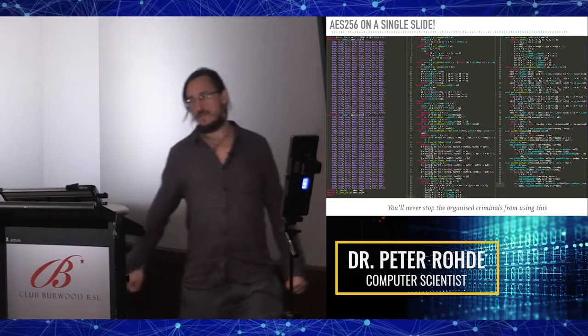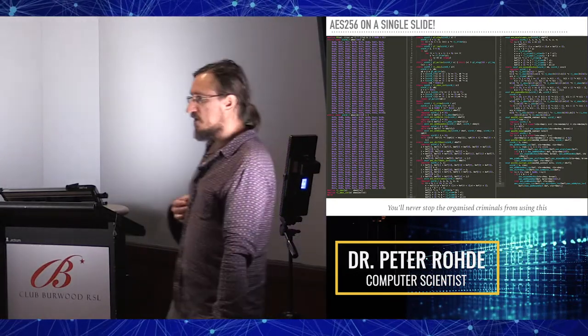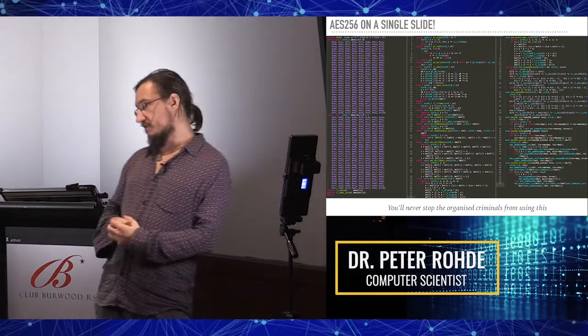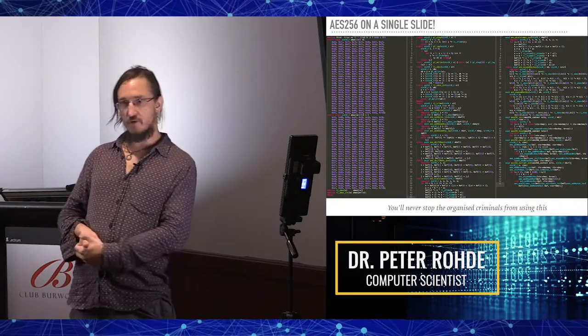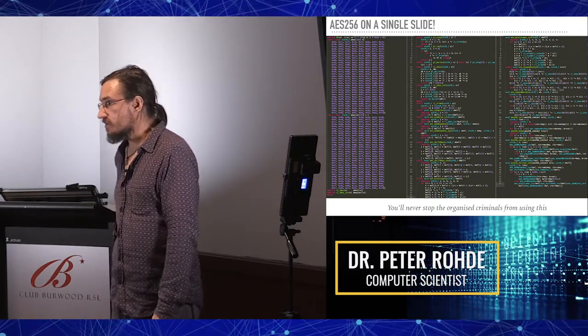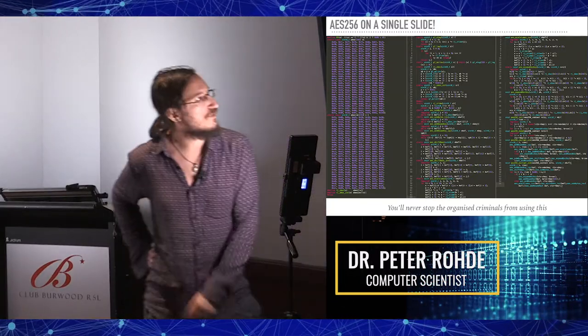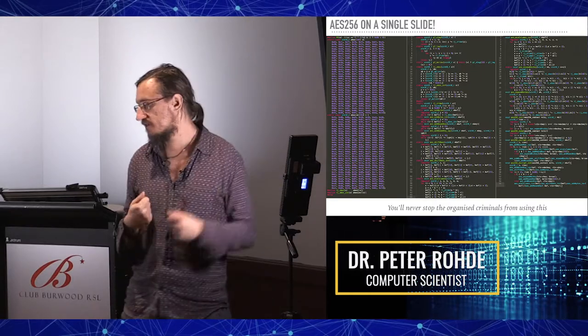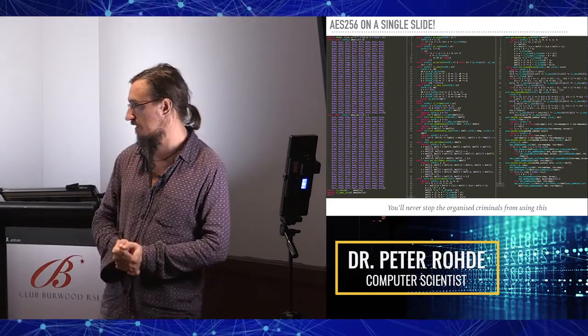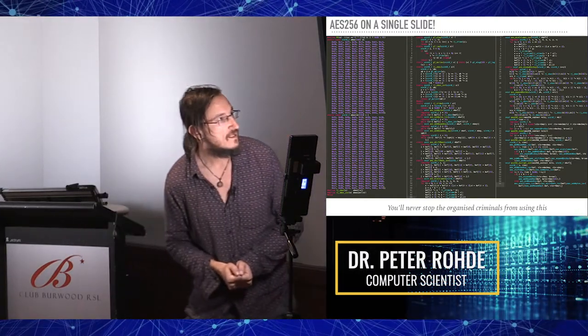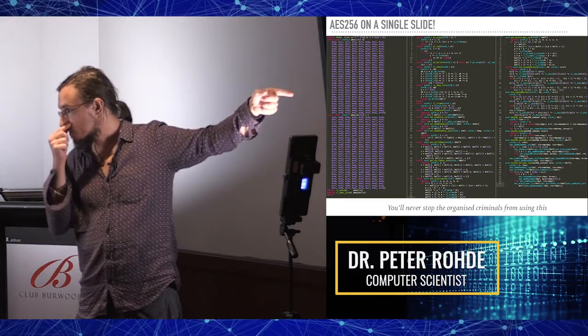For a long time, governments have been trying to prevent us from using encryption technology. For a long time, many cryptographic codes, the algorithms behind them, were considered munitions. They were actually protected and it was illegal to export them, to share the algorithms with overseas entities because they were considered a dual use technology or a defense or munitions technology because they could be used to subvert government. This is the entire source code in the C programming language for the AES-256 private key encryption algorithm, which I managed to squeeze onto one slide. The point is that when things are so compact and so well known and so impossible to prevent from being shared, when the government says we want a backdoor in your app, who are they really targeting it at? Because you can download that in five seconds by doing a Google search and compile it yourself.